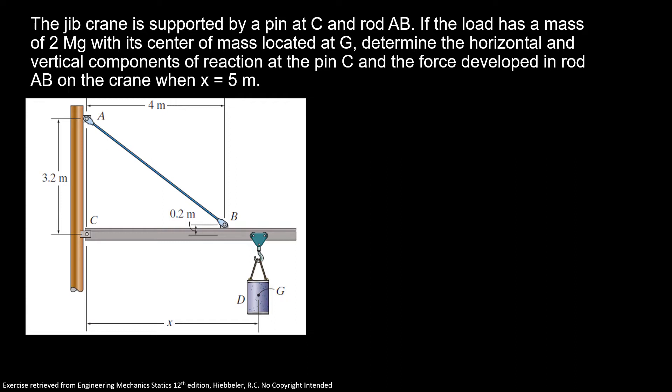The jib crane is supported by a pin at C and rod AB. If the load has a mass of 2 megagrams with its center of mass located at G, determine the horizontal and vertical components of reaction at pin C and the force developed in rod AB on the crane when x equals 5 meters.